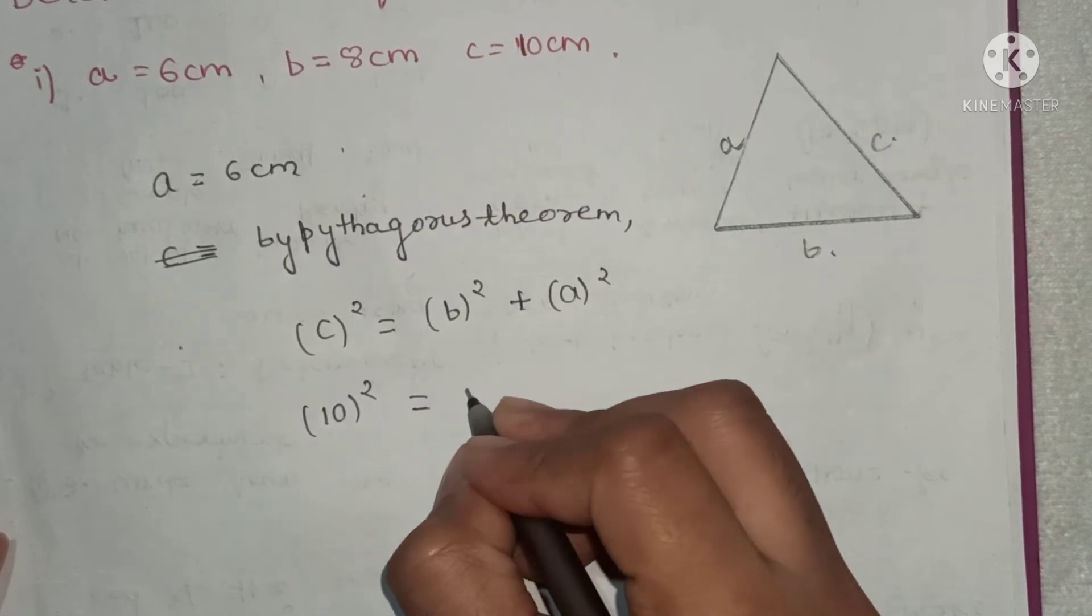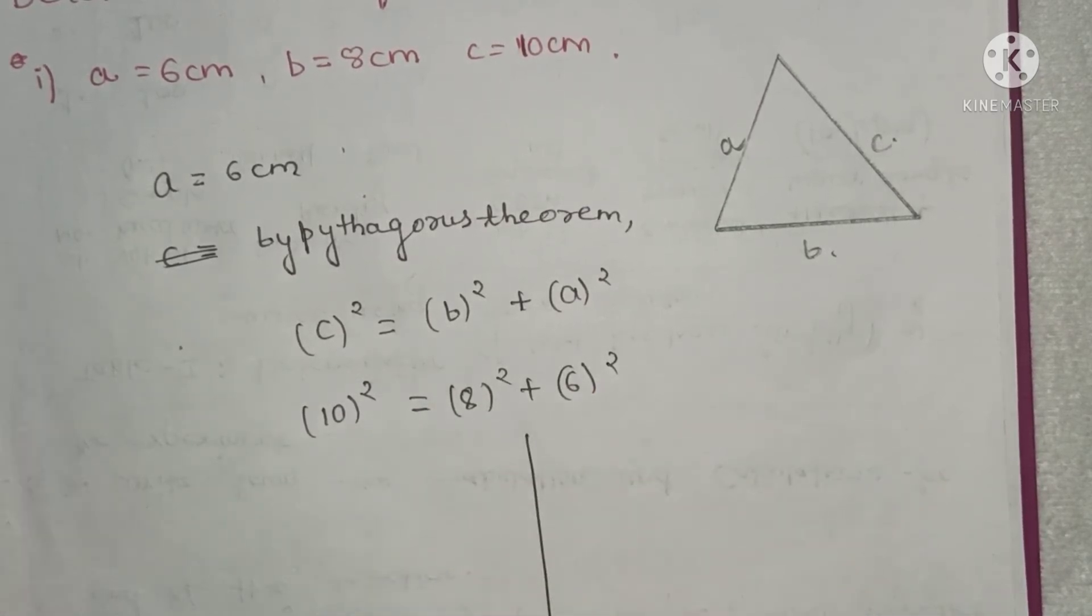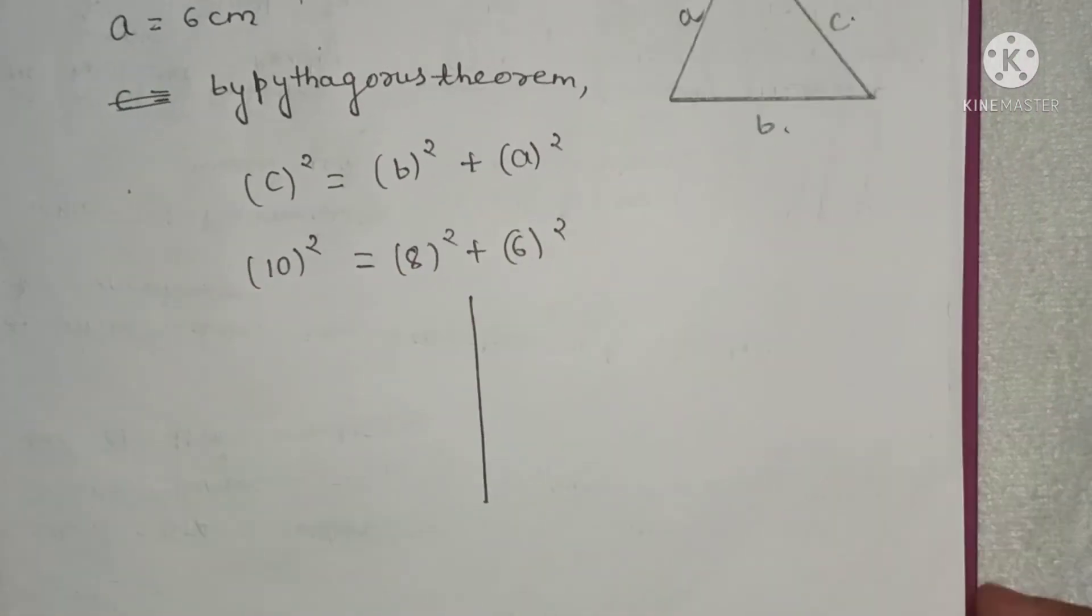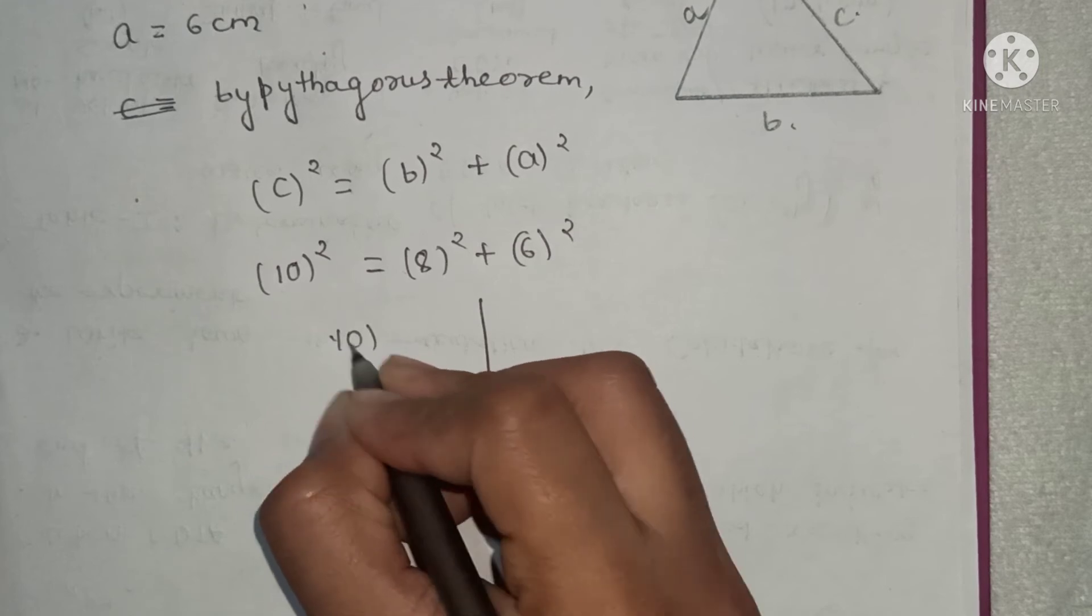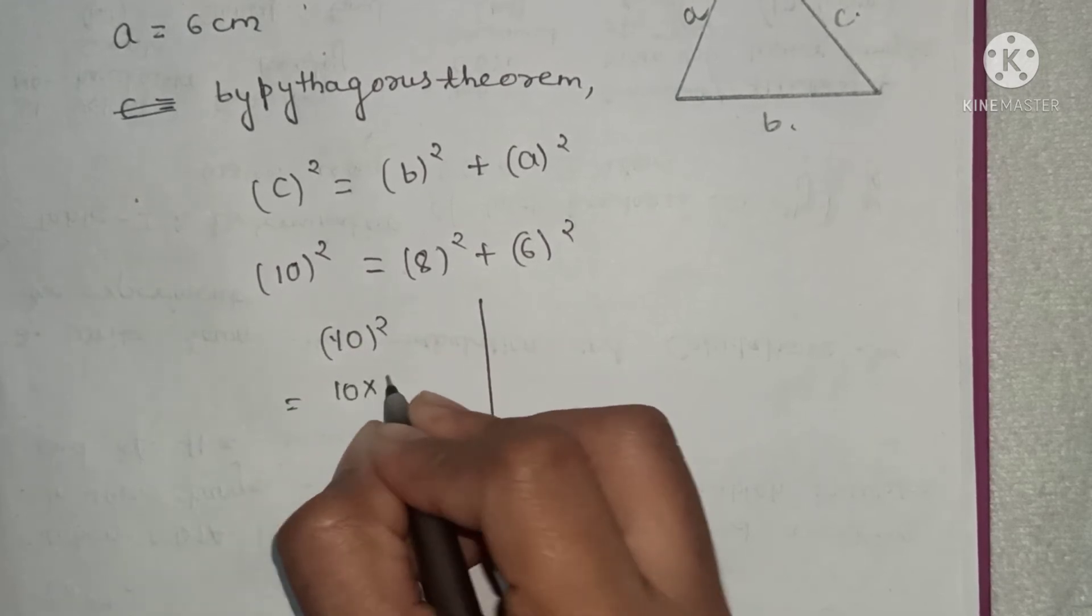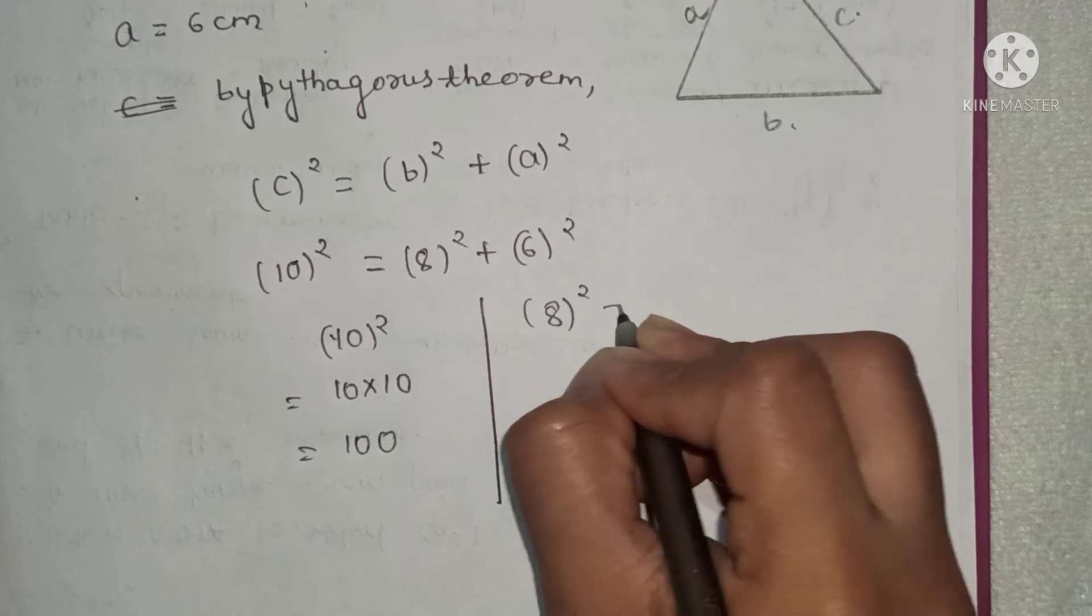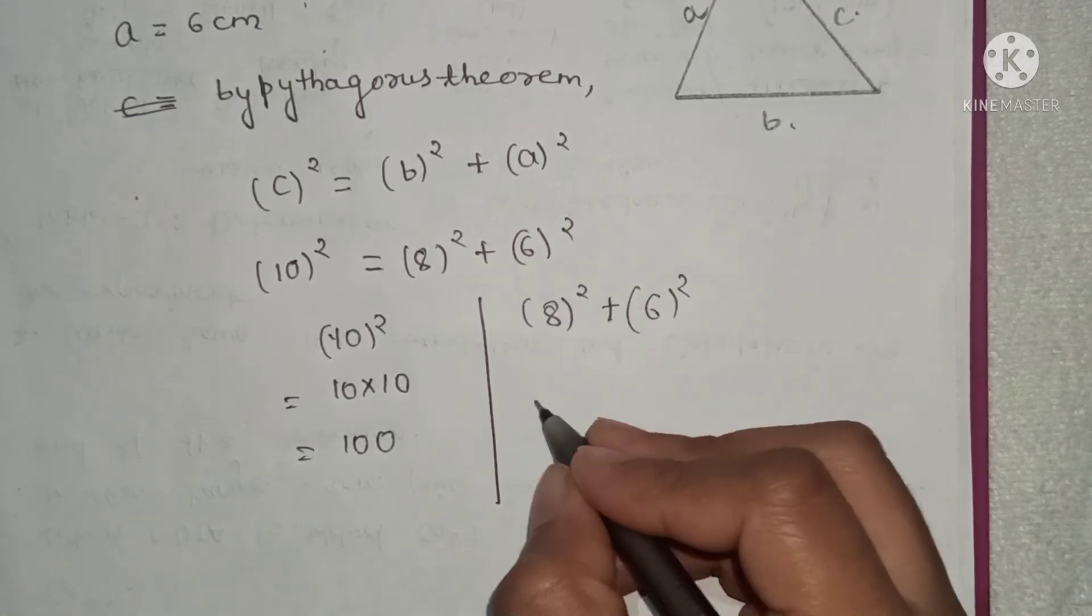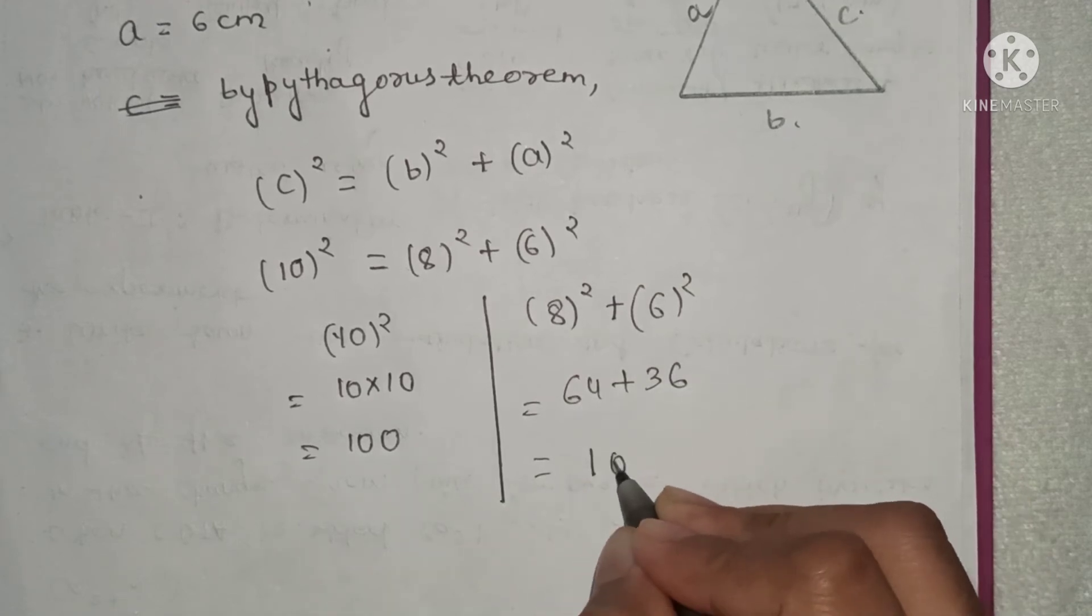We will do it separately. 10 squared will be 10 times 10, that is 100. 8 squared plus 6 squared is 64 plus 36. So here we will get 100.